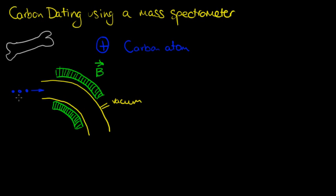These carbon ions from the sample contain both C-14 and C-12. There is no chemical difference between them — both have atomic number six, so chemically they are exactly the same. That's why carbon-14 dating works: living organisms take up carbon-14 just as they would carbon-12. But they have different mass numbers, and that difference is what makes mass spectrometry useful.